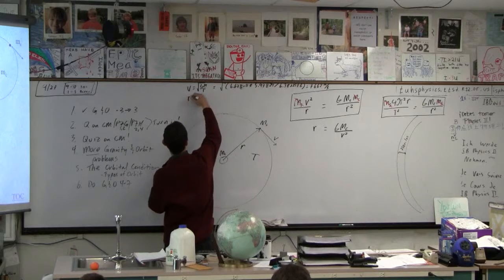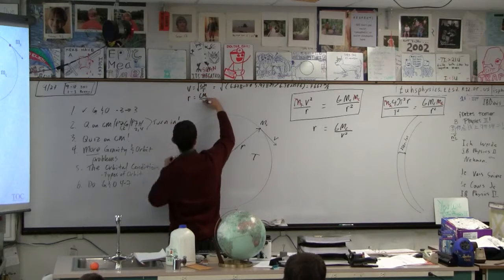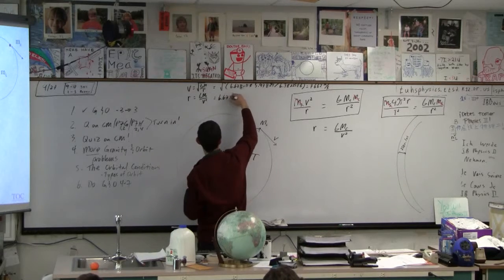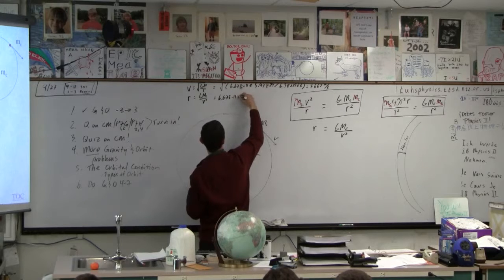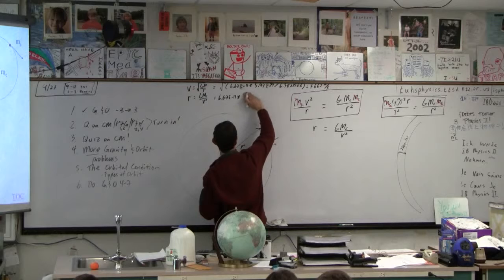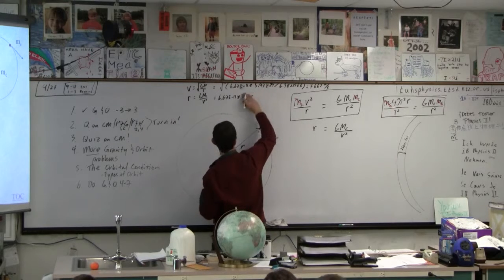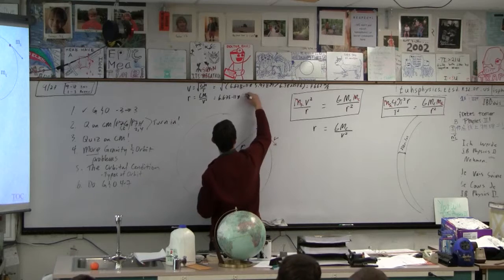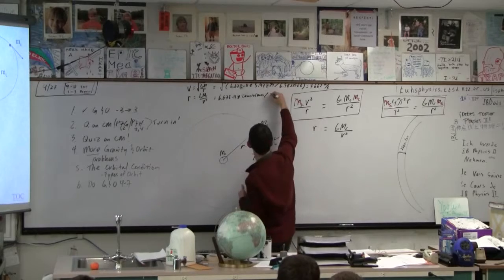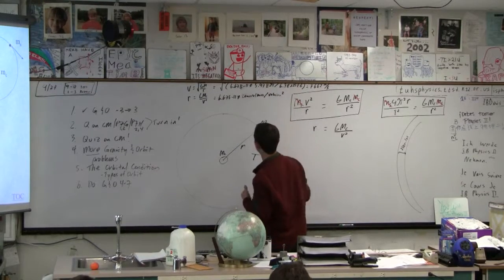And then your calculator, this would be really simple. This would be 6.67 E negative 11 times whatever it is, the planet mass. I'm just going to say planet mass or central body mass, central mass. Divided by the velocity squared, that's easy.